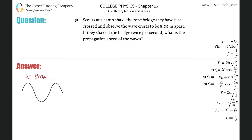Number 51. Scouts at a camp shake the rope bridge they have just crossed and observed the wave crests to be 8 meters apart. If they shake the bridge twice per second, what is the propagation speed of the waves?